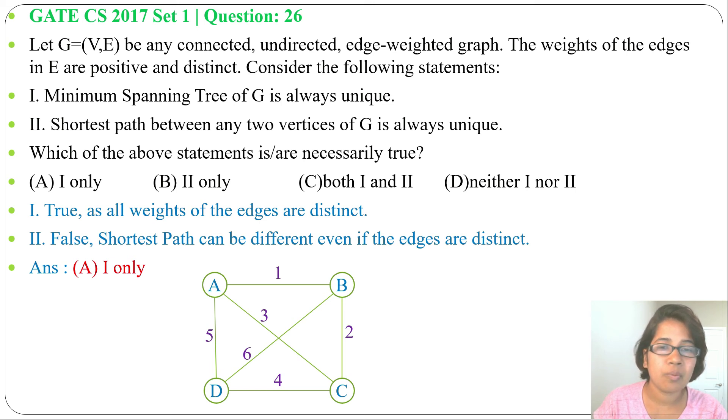There will be only one minimum spanning tree if weights of the edges are positive and distinct. I already discussed minimum spanning tree, just go through that. And if this lecture is helpful for you, please like, share and subscribe. Thank you.